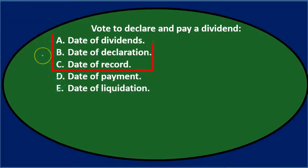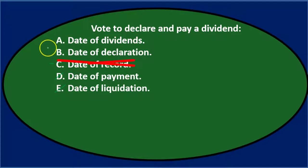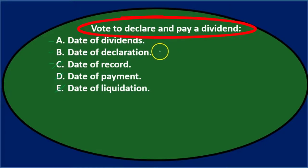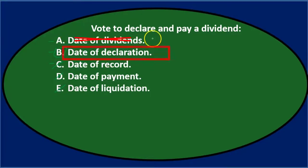So we're left with A, B, and C. Vote to declare and pay dividends is either A, B, or C — either date of dividends, date of declaration, or date of record. Of those three, the first two sound closest to what we're talking about. It's vote to declare and pay dividends, so either the date of the dividend or the date of declaration. Of those two, B sounds most proper because the question says we are declaring that we're going to have the dividends. So B is it, that's the final answer.